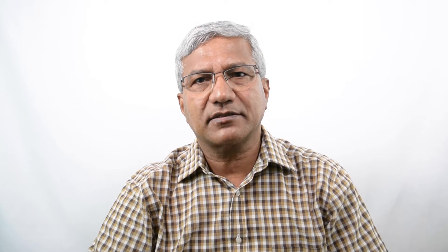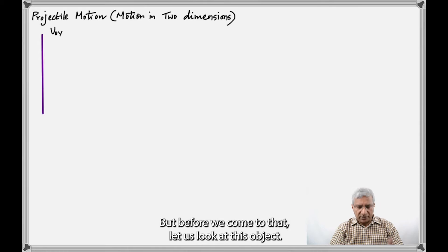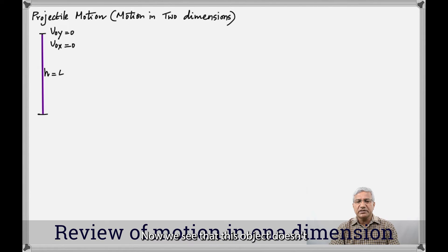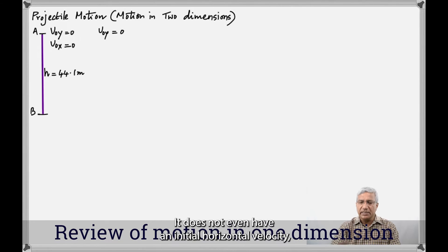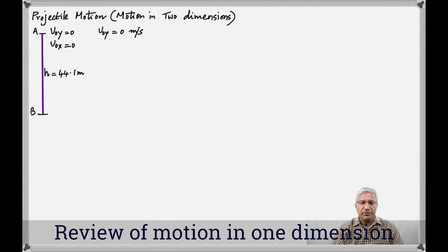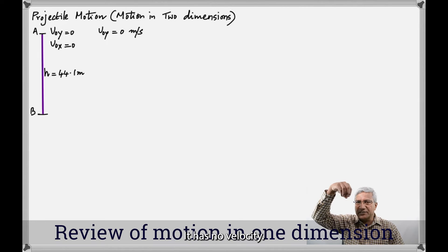It could be a javelin in athletics, it could be the shot put — anything that you give a certain velocity at an angle to the horizontal. But before we come to that, let us look at an object that is dropped from a certain height. This object doesn't have an initial vertical velocity, and it does not even have an initial horizontal velocity. So it's dropped from a height of 44.1 meters, and its initial velocity along both the y and the x axis is zero because it has no velocity.